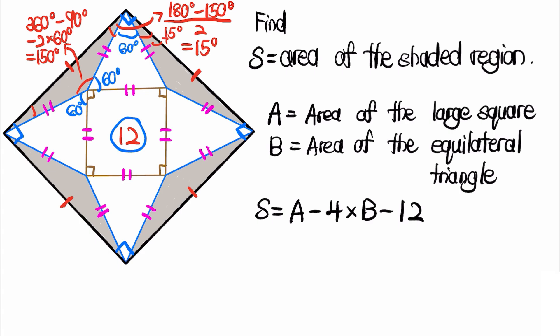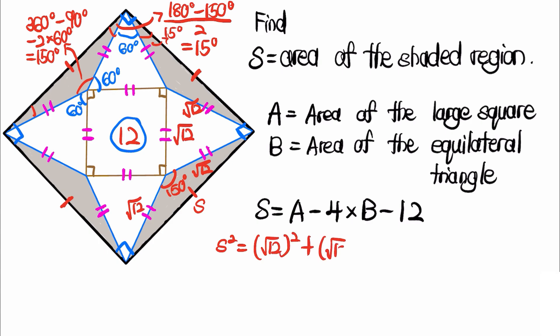Now let's compute the areas A and B. Since the square in the center has an area of 12, we know its side length is √12. Because the equilateral triangle shares this side, that side is also √12. Since this angle is 150 degrees, we can compute the side length of the large square — let's call it s — using the cosine rule: s² = 12 + 12 minus 2 times 12 times cosine of 150 degrees, and cosine of 150 degrees equals negative √3 over 2.